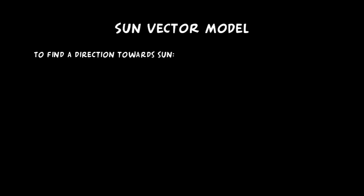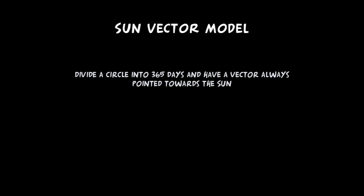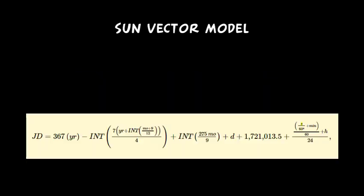Sun vector model. To find direction towards the sun, several models can be applied. The simplest is to divide a circle into 365 days and have a vector that always points towards the sun. Then by knowing which day it is, find direction towards the sun by converting time and date into Julian date. This method is not very accurate.